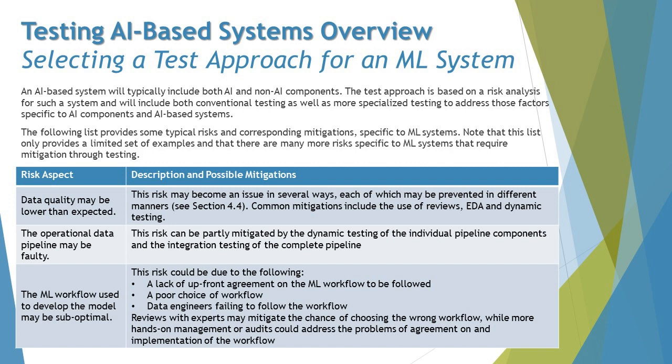The second aspect is that the operational data pipeline may be faulty. This risk can be partially mitigated by dynamic testing of the individual pipeline components and integration testing of the complete pipeline. Data passing from one node to another — through neurons — needs to be tested, as this pipeline can produce faulty outputs, so we need to check everything in detail at the integration level.